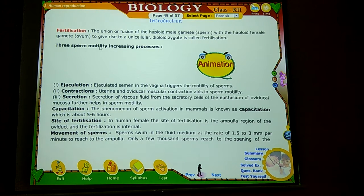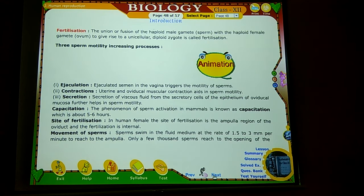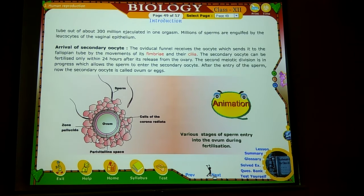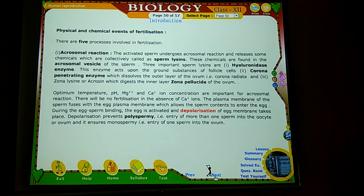There are several sperm motility increasing processes. Ejaculation, contraction, secretion, capacitation, site of fertilization, movement of sperm — all these are the events of fertilization. Also included is the arrival of secretory signals, and then the physical and chemical events of fertilization.